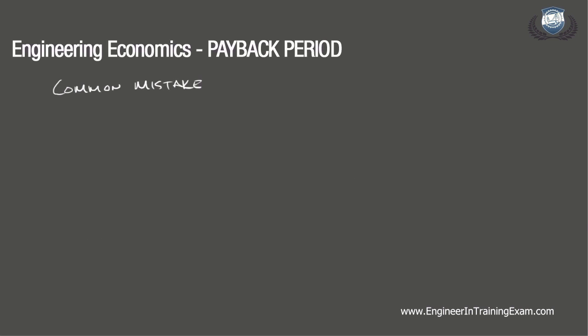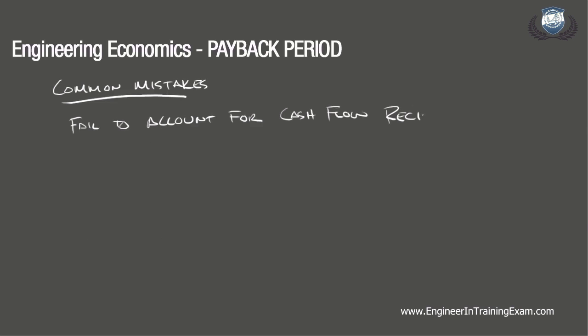There aren't many ways to err on a problem like this — they are pretty straightforward. The most common mistake is to fail to account for all the cash flow receipts and costs year over year. We may fail to account for the additional money going into the project annually, which affects our net cash flow. By doing this, we incorrectly realize a greater positive cash flow than reality, which will throw off our analysis.